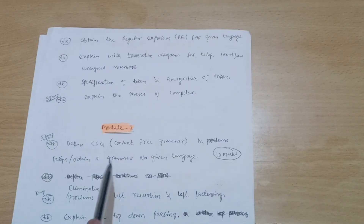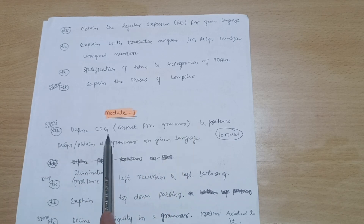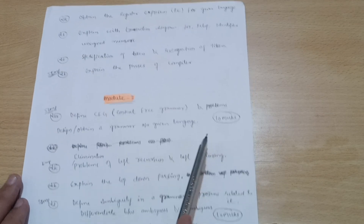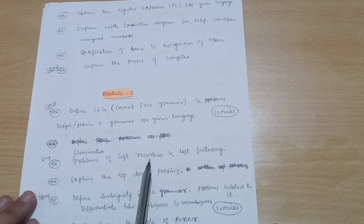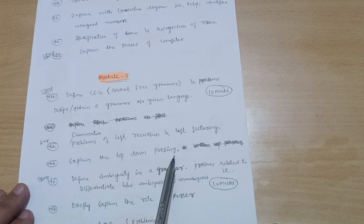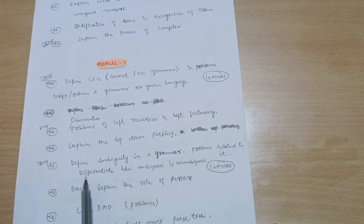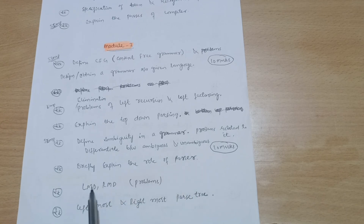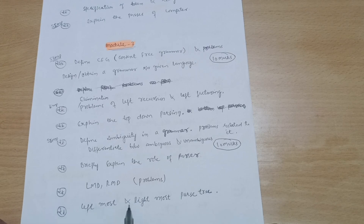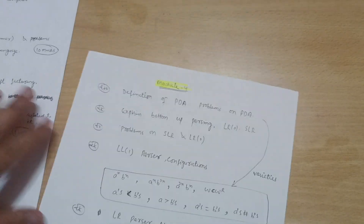Now, Module 3: the super important question here is defining CFG (Context Free Grammar), with problems like designing a CFG for a given language — this is a 10-mark question. Refer to previous question papers and you will see this question appearing first. Next are the elimination problems of left recursion and left factoring, and explain top-down parsing. Define ambiguity in a grammar — most important — along with problems related to it, and differentiate between ambiguous and unambiguous grammars. Also briefly explain the role of the parser, LMD, RMD, and problems on leftmost and rightmost parse trees.